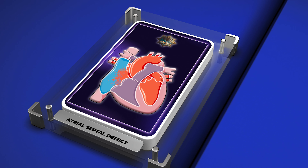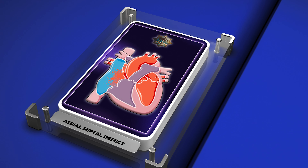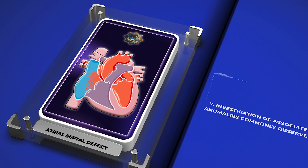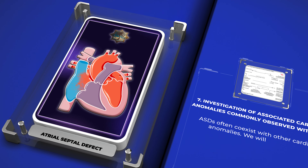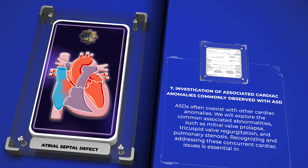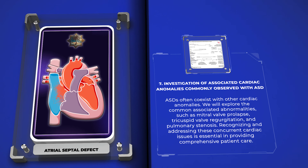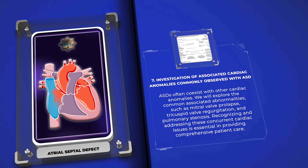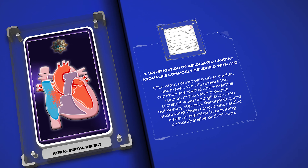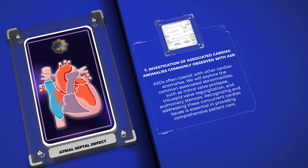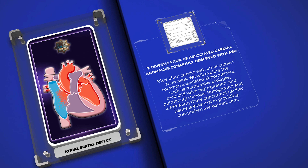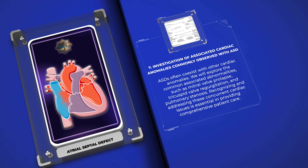ASDs often coexist with other cardiac anomalies. We will explore the common associated abnormalities, such as mitral valve prolapse, tricuspid valve regurgitation, and pulmonary stenosis. Recognizing and addressing these concurrent cardiac issues is essential in providing comprehensive patient care.